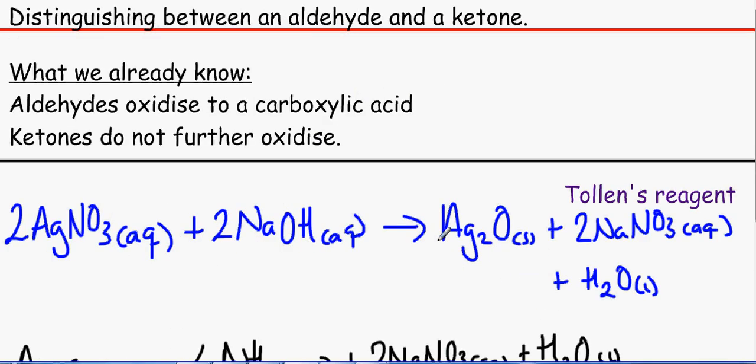So when we want to distinguish whether one is an aldehyde or a ketone, what we do is we use this fantastic reagent called Tollens reagent. And the Tollens reagent, we need to prepare this freshly in the lab just because it's got a very short shelf life. So what we do is that we mix aqueous sodium hydroxide to aqueous silver nitrate to make the brown precipitate, which is the silver oxide, with also the byproducts.